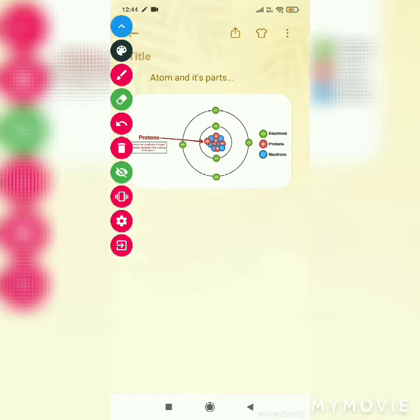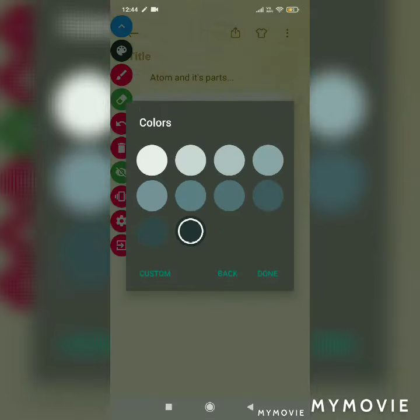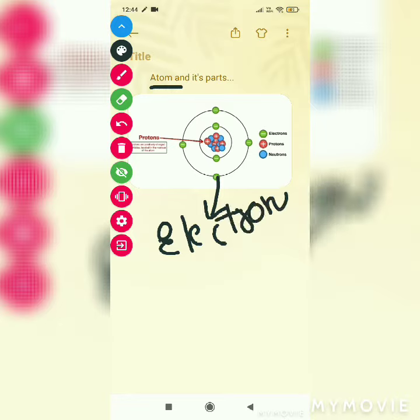We are going to learn about atoms and its parts. Atoms consist of three parts: protons, neutrons, and electrons. We will start with electrons. Electrons are negatively charged particles that orbit around freely.